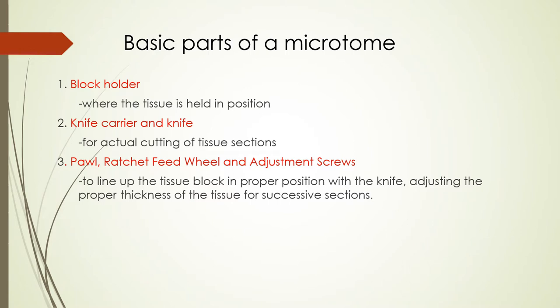Here we have a picture of the most common microtome used here and abroad — the famous rotary microtome. What are the basic parts of a microtome? First, we have the block holder, where the tissue block is held in position. Next, we have the knife carrier and knife, used for actual cutting of tissue sections. Then we have the pawl, the ratchet feed wheel, and the adjustment screws, which line up the tissue block in proper position with the knife and adjust the thickness for successive sections.